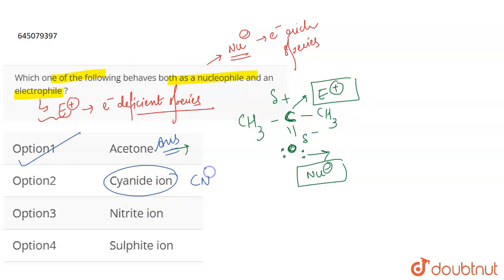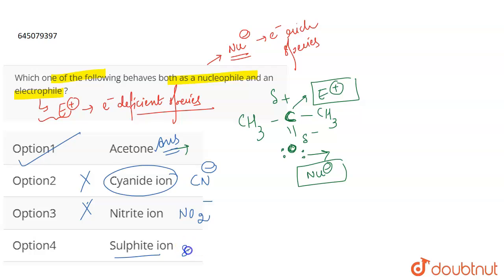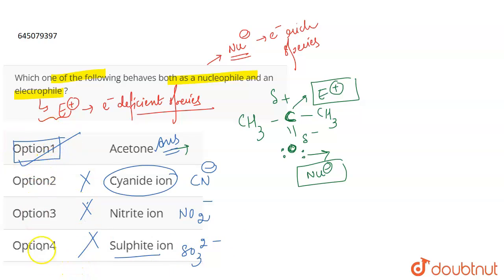If you talk about the cyanide ion, this is CN⁻ — there is a negative charge, so it is going to act only as a nucleophile; this cannot be the answer. Nitrite ion is NO₂⁻ — again a negative charge, it will behave as a nucleophile; cannot be the answer. Sulphite ion is SO₃²⁻ — again a negative charge, going to act as a nucleophile, not as an electrophile. Therefore, the correct answer is option one.